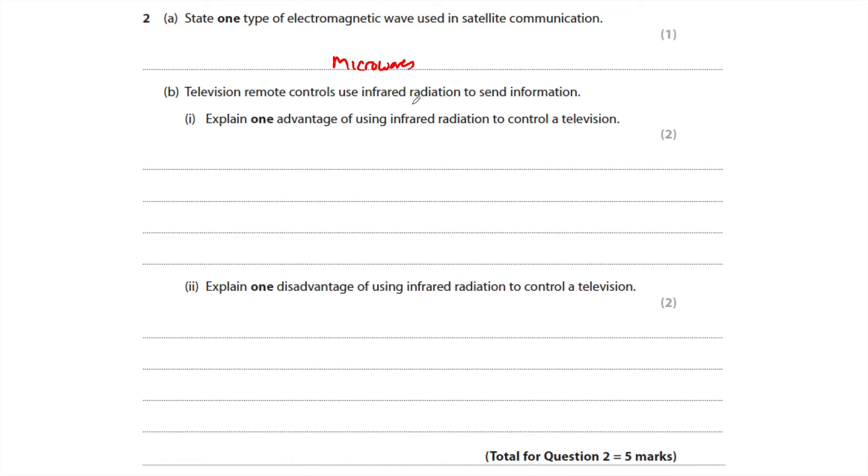Television remote controls use infrared radiation to send information. Explain one advantage of using infrared radiation to control a television. Now remember, when you are looking at either Bluetooth, Wi-Fi, or infrared, one of the key things is their frequencies and how much data they can transmit every second. And remember, infrared has the highest frequency of any of the three. So the advantage that I would state is that it has a high frequency, so can transmit more data per second because of the large bandwidth.